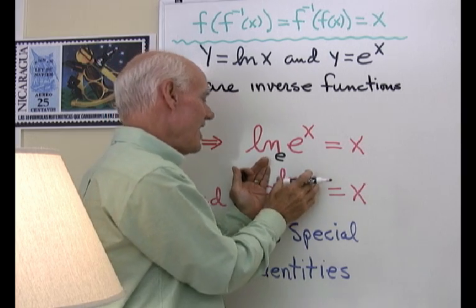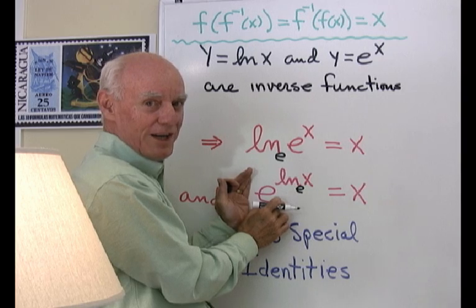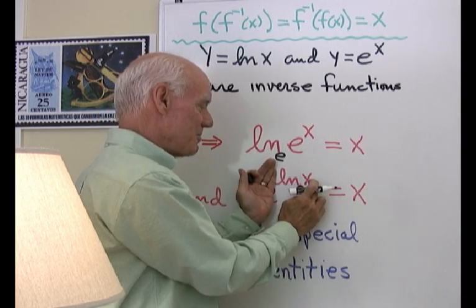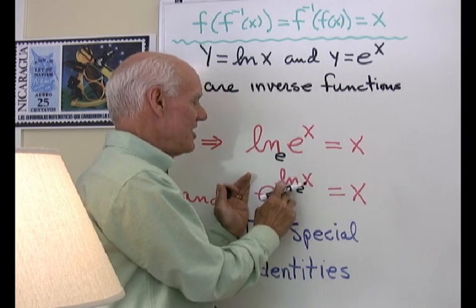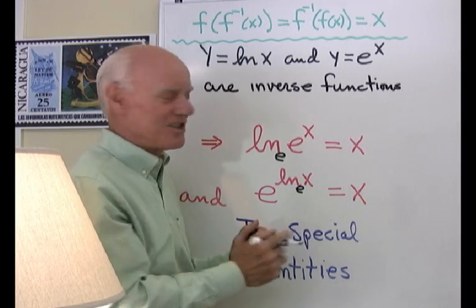Well, if I take that exponent and raise e to it, what do I get? x. Because it's specifically the exponent I need on e to get x. If I raise e to that exponent, I must get x.